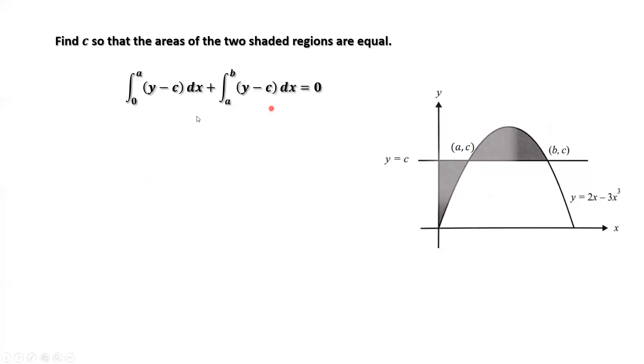Now look at the left-hand side. The function is the same, y minus c. The integral from 0 to a, then from a to b, we can merge the two integrals into one integral. From 0 to b, the function is y minus c.